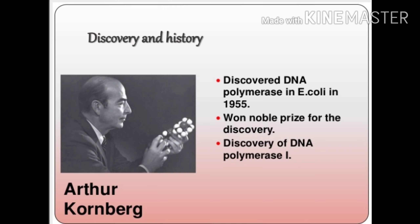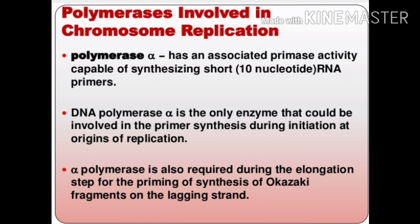What is the function of DNA polymerase mainly? It adds deoxyribonucleotides, thereby causing the polymerization of nucleotides. In the case of eukaryotes, the DNA polymerases are of different types. First is DNA polymerase alpha — it has an associated primase activity capable of synthesizing short RNA primer, meaning an RNA strand having about 10 nucleotide bases. DNA polymerase alpha is the only enzyme involved in primer synthesis during initiation at the origin of replication. It is also required during the elongation step for the priming of synthesis of Okazaki fragments on the lagging strand. So the main function of DNA polymerase alpha is to synthesize primers.